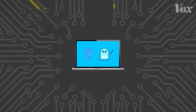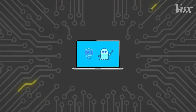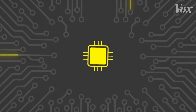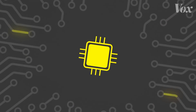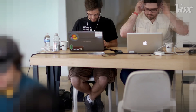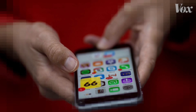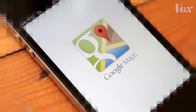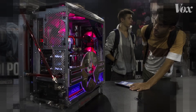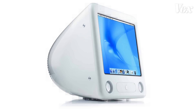What makes Spectre and Meltdown especially sinister, aside from their James Bondian names, is that they affect your computer at the hardware level — the processors inside your device. And these flaws exist not because of a bug in computer software design, but because of a feature in computer hardware that has been around since 1995.